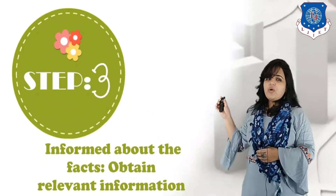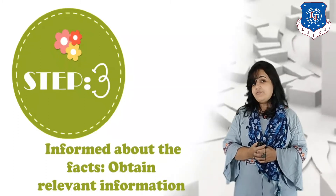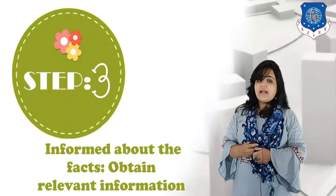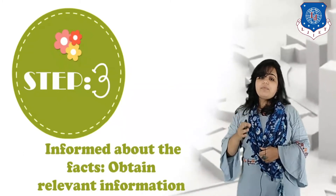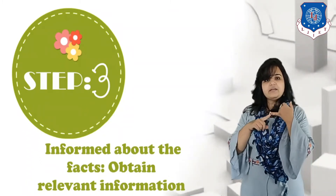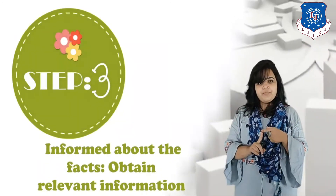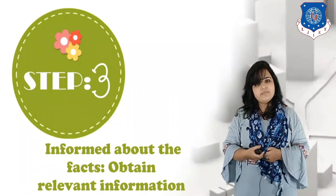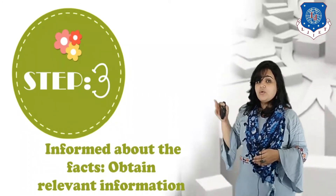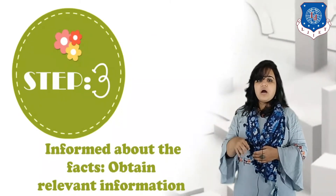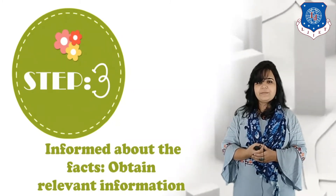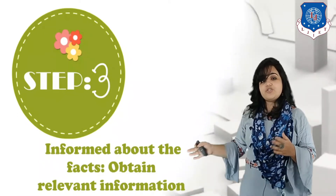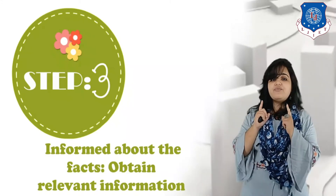The third step is to be informed about the facts — obtain all the relevant information. Get to know the exact amounts of lead and arsenic being thrown out each day. Find out which processes are causing this and how important those processes are to computer manufacturing, which is the main aim of the factory. Understand how shutting down a particular process would cause a standstill in the manufacturing facility. Identify all the pros and cons, do proper research, and obtain all relevant information before making a decision — make sure you make an informed decision.